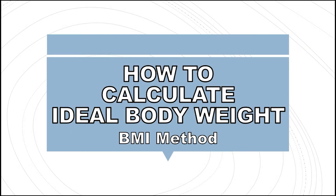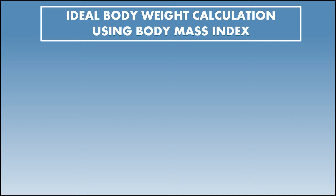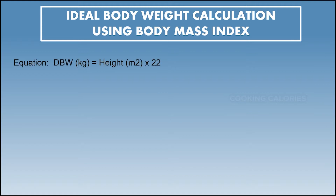Hello everyone. Today I am going to teach you how to calculate ideal body weight using the BMI method. To calculate ideal body weight using the BMI method, we will be using the following equation: ideal body weight in kilograms equals height in meters squared, multiplied by 22. Please take note that 22 is a constant number.